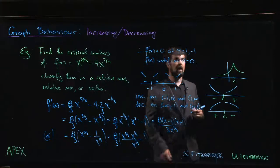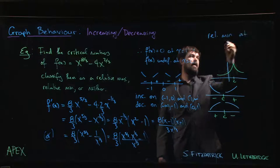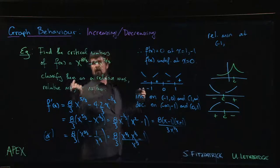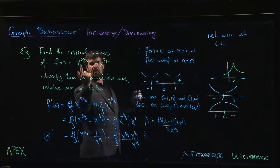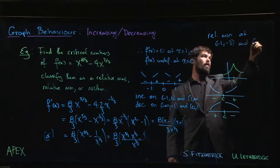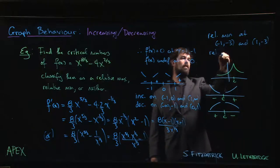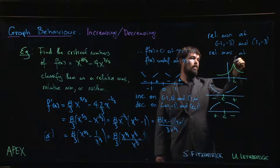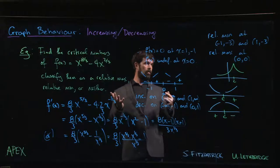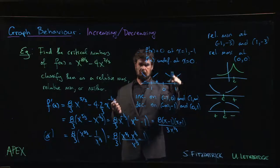Finally, we have a relative min at minus 1, f of minus 1. What's f of minus 1? We can work that out - minus 1, these are even powers, so that's going to be 1, 1 minus 4, minus 1, minus 3. And there's going to be a relative max at 0, 0. So we've found the three critical numbers and identified them: relative minimum, relative maximum, relative minimum.